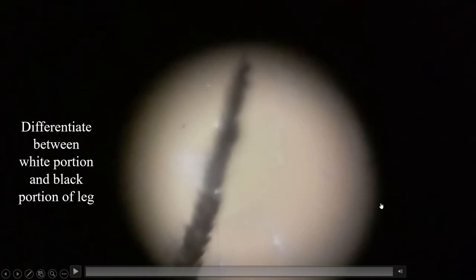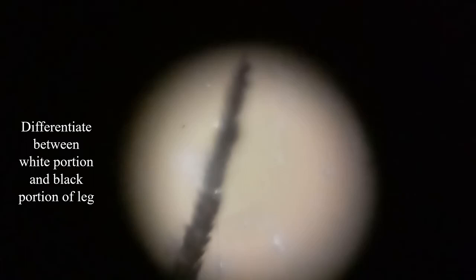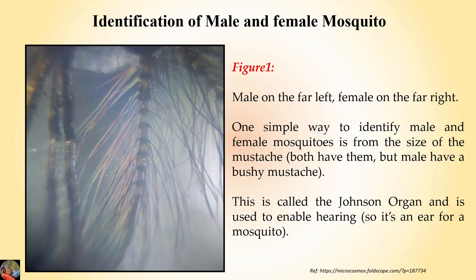Friends, by understanding the differentiation between microscopic and macroscopic views, one can understand what kind of mosquitoes are present around us and how we can take action for good health — by spraying mosquito repellent solutions or using mosquito repellent coils. Identification of male and female mosquitoes can be described here. The male leg is shown far left and female far right. One simple difference between male and female mosquitoes is the size of the mustache — both have bushy antennae, but the male has a more bushy one.